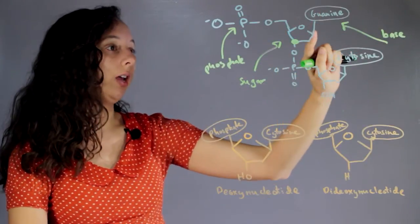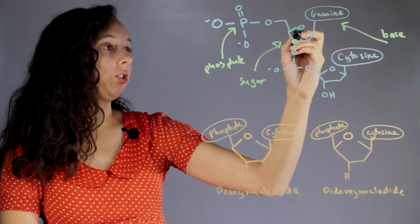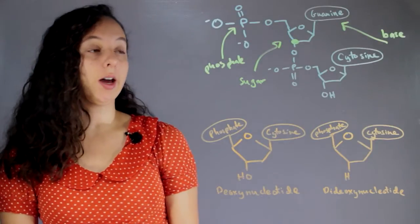They connect unit to unit from this bond right here. It's really important that this sugar can connect to this phosphate group, and it does that because of this oxygen.